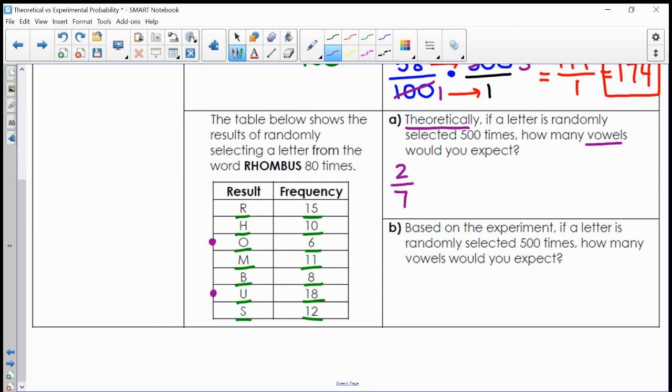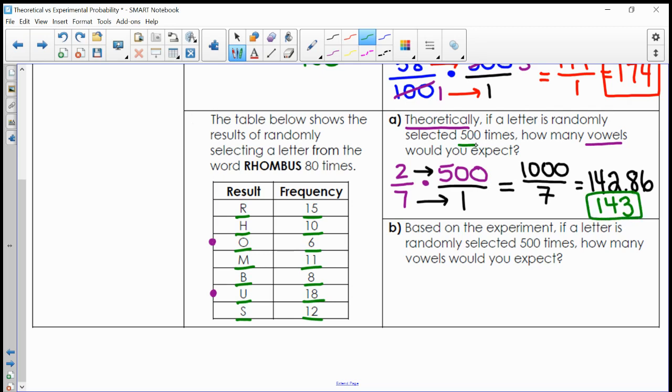So let's use this probability to make a prediction of what would happen if I did this 500 times. In this scenario, I don't have any numbers that I can cross-cancel, so I'll just go ahead and multiply straight across. 2 times 500 is going to give me 1,000. 7 times 1 is going to give me 7. If I simplify this fraction, this gives me something like 142.86. Since I'm talking about the number of times that I would randomly select this vowel, I'm going to round this to its nearest whole number. So I would say that I would expect this to happen about 143 times out of the total of 500.